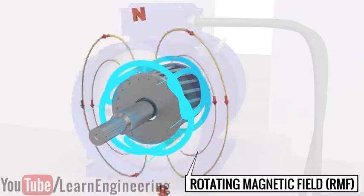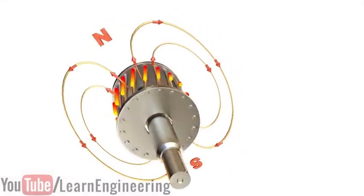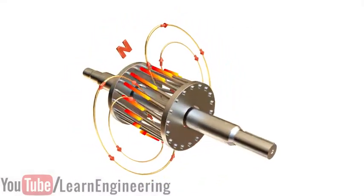This RMF cuts the rotor bars. According to Faraday's law of electromagnetic induction, an electromotive force is induced in the bars. Because the rotor bars are short-circuited by the end rings, this induced EMF generates a current to flow through the rotor bars.